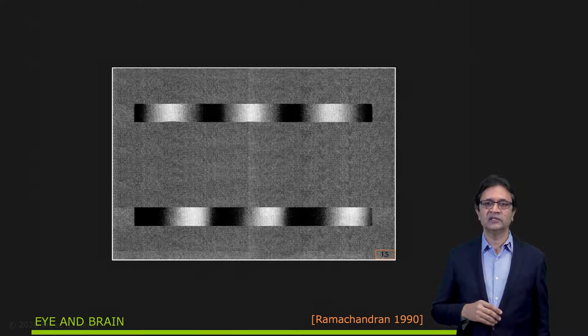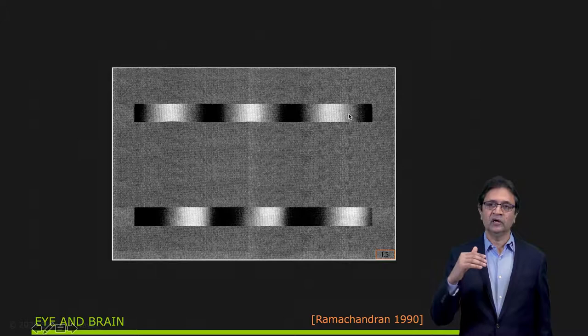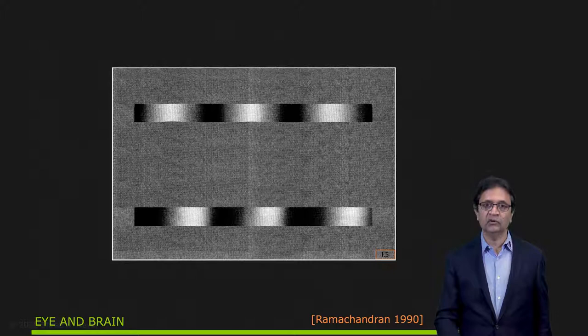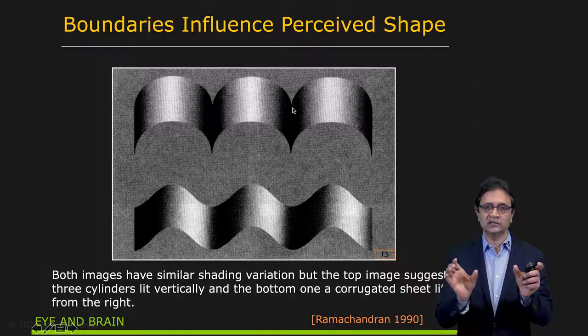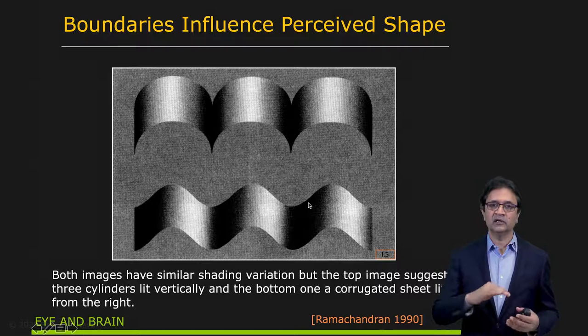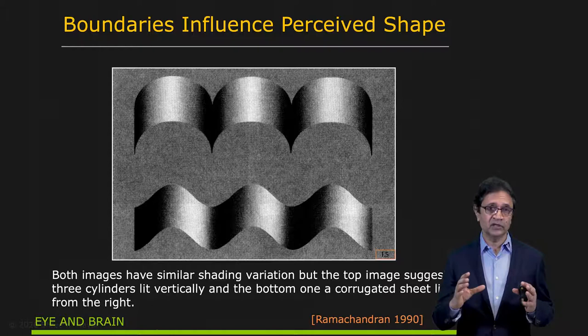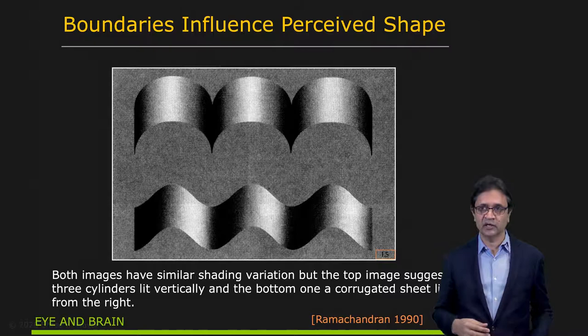And then there is the issue of boundaries, which is very powerful. Here you see two strips — both shaded, and the shading is not that different between them. But if you manipulate the boundary of these strips, you can dramatically change the interpretation of shape. If I cut out a boundary in one way, you see three cylinders sitting next to each other lit from above. In another case, by cutting it out differently, you end up perceiving a corrugated surface with lighting coming from the right side. So boundaries are extremely important — they give us a very strong cue and constraint that allows us to perceive shape from shading.